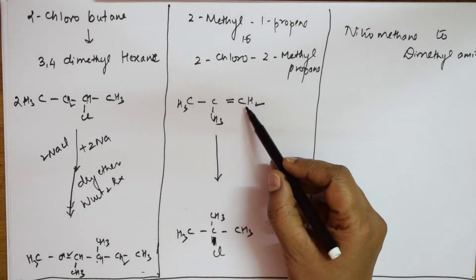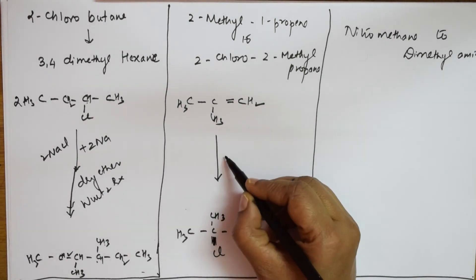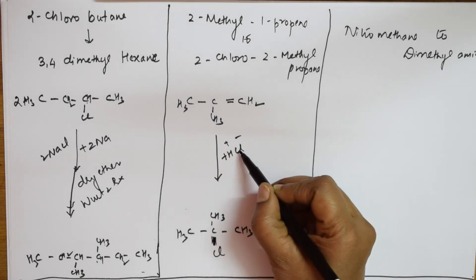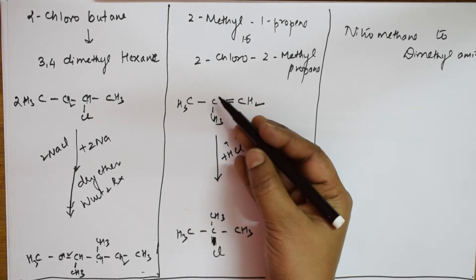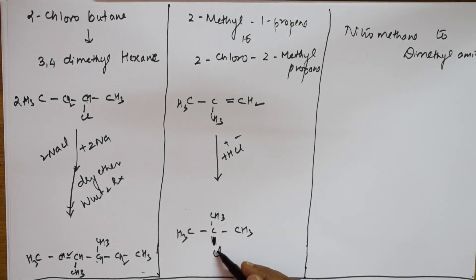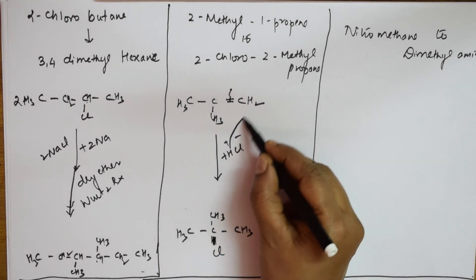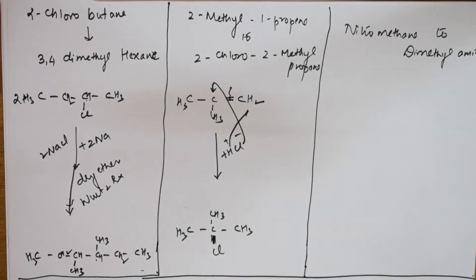Add HCl. This is H+ and Cl-. The negative addendum adds to the carbon having the lesser number of hydrogens. So to the second carbon, this bond is broken, this hydrogen comes in and adds to this, and this chlorine comes and adds to this. Done.